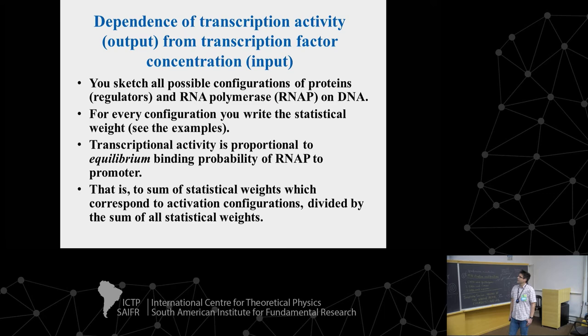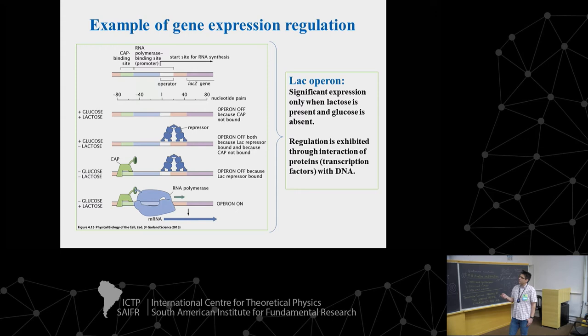For example, with a repressor, activator, and RNA polymerase, configurations on the promoter can include: repressor bound alone, repressor and activator bound together, RNA polymerase and activator bound together. Note that when the repressor is bound, it excludes RNA polymerase — that is why it is a repressor. You can also have empty DNA.